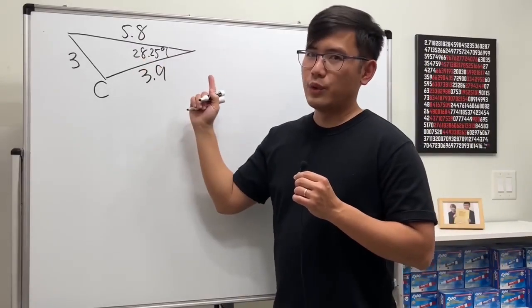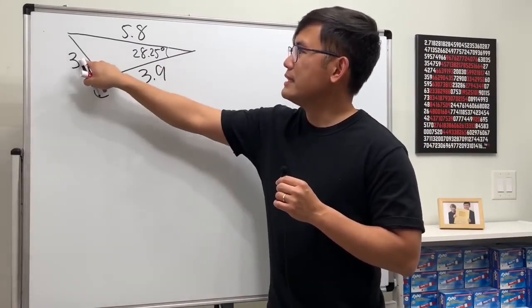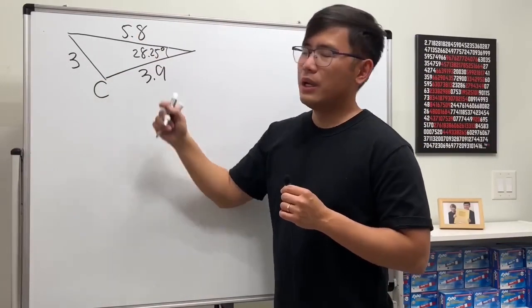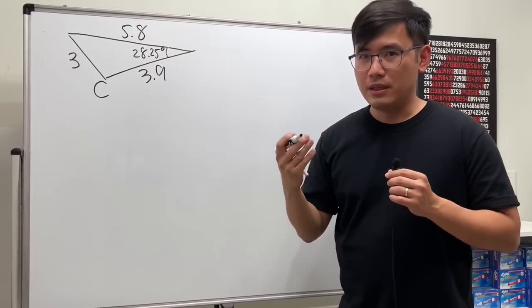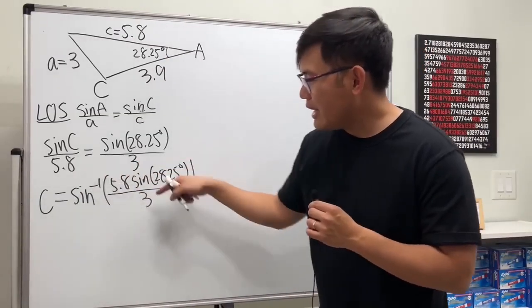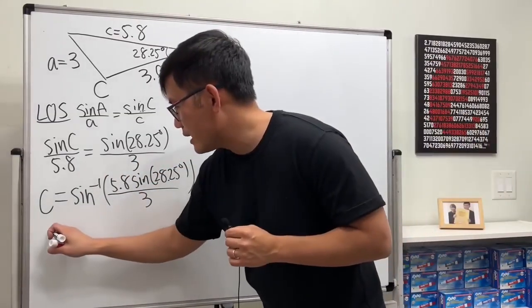Because I gave you guys this angle as well, as you can see we have side-side-angle, so in fact we can just use the law of sines. Enter everything on the calculator, we will get the measure of angle C equal to 66.2 degrees.